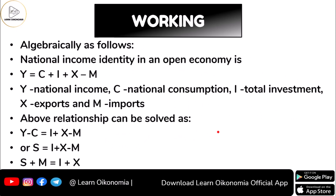Now let's understand the working with an algebraic explanation. We know that the total income of the nation is equal to C plus I plus X minus M, where we are not considering the government's case in this simplistic model. Here C means consumption, I means investment, X means export, and M means imports.